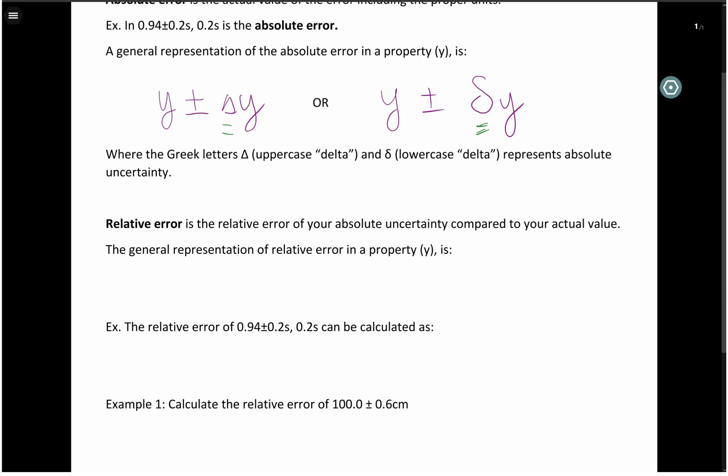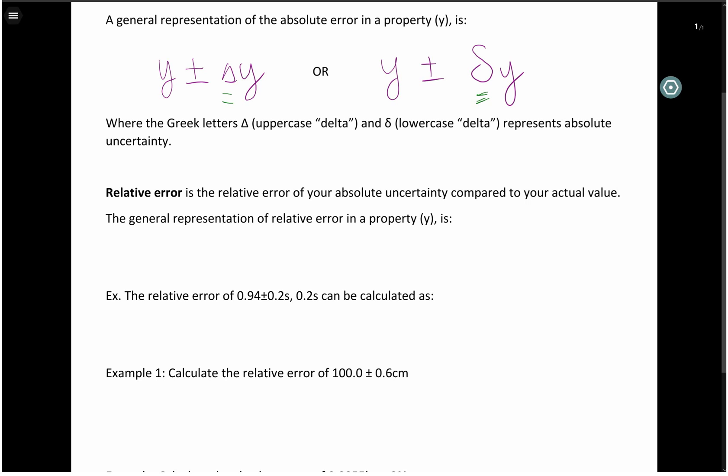That's absolute error, but what is relative error? Relative error is taking kind of a percentage of your absolute uncertainty from your original actual value. So it's relative, it's in relation to your actual value how much space does your error take up. So in a way it's represented as a percentage.